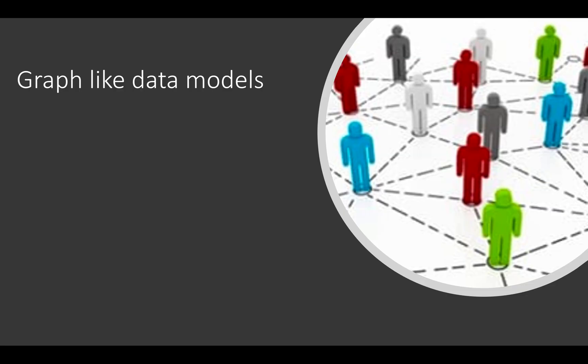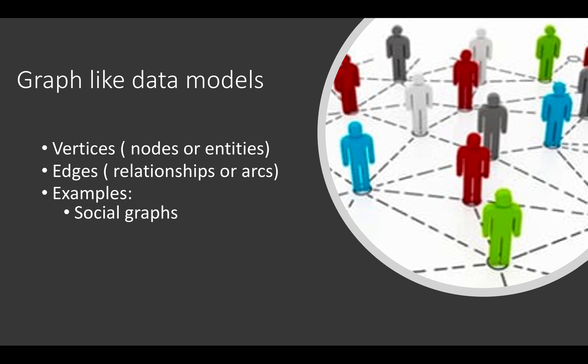Now let's move into our final topic, graph like data models. Graph has vertices, which are the nodes or entities, and it has edges, which represent a relationship between those nodes. Let's take some examples like the social graphs, for example Facebook where the user has a friend and there is a relation between multiple users, web graphs and roads or rail networks.